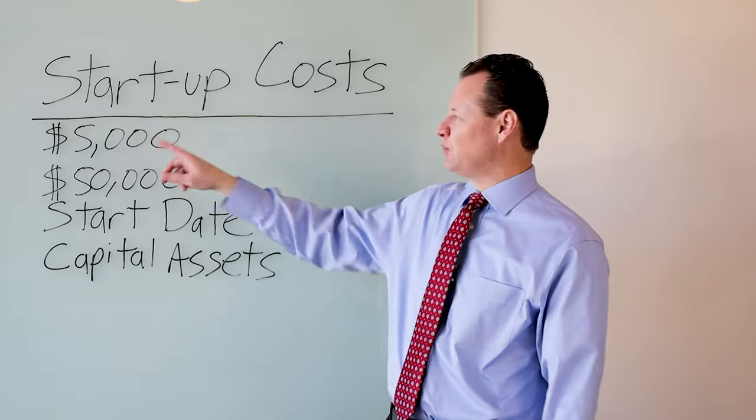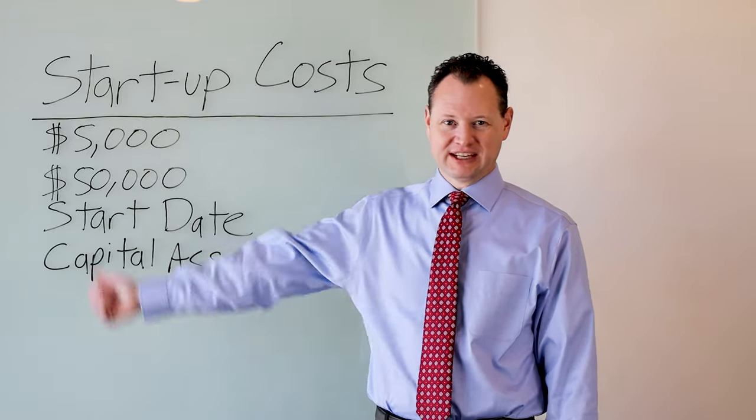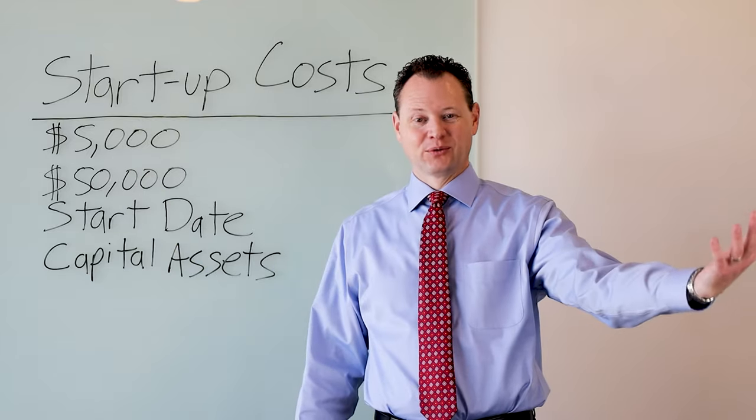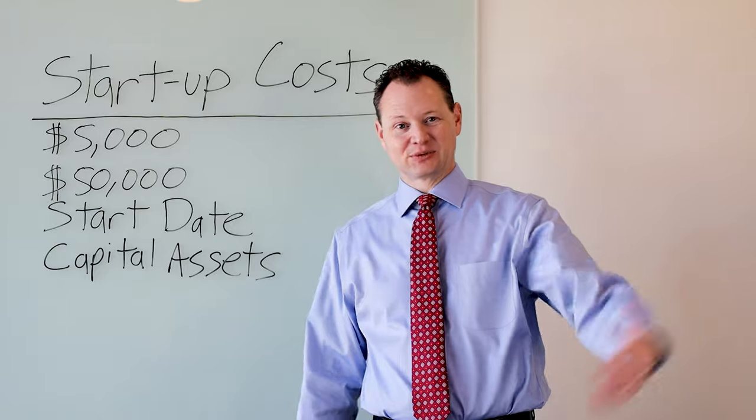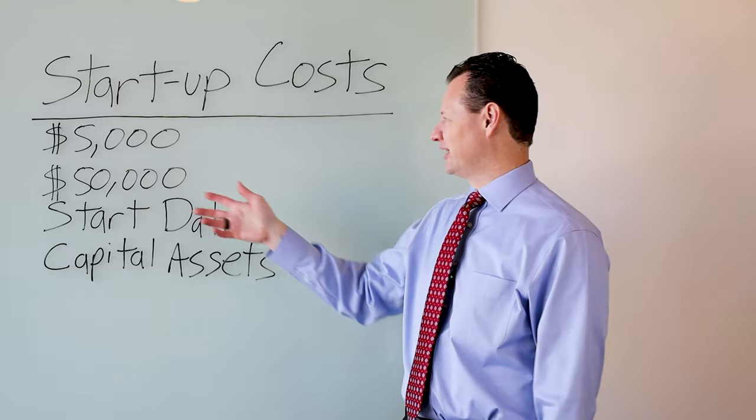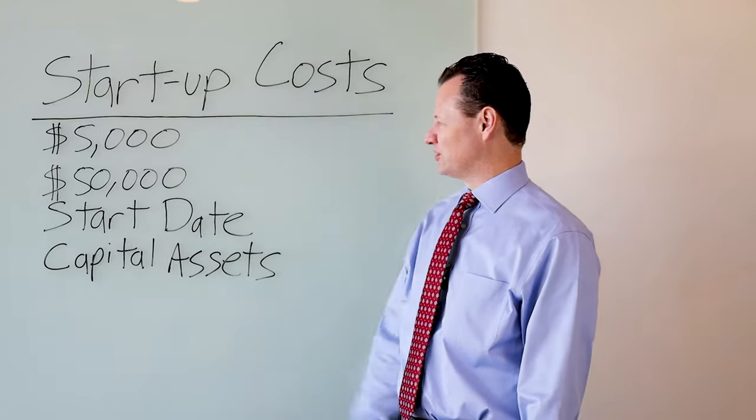So if we have $5,100 in startup costs, we can write off $5,000. The other $100, we're going to write off over 15 years. We get a small write-off every year for the next 15 years to write off those startup costs.